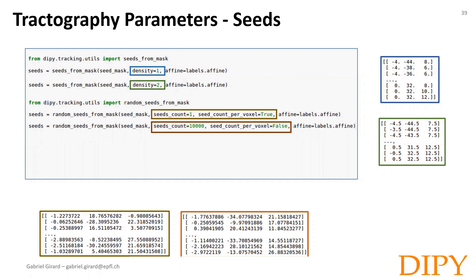For whole-brain connectivity analysis, it is recommended to use 1 to 10 million streamlines or even more. For large bundle estimation, such as the CST or corpus callosum, fewer seeds might be enough. For narrow white matter structures, such as the fornix or the uncinate fasciculus, targeted region-of-interest seeding might be more effective to estimate the bundle trajectory.